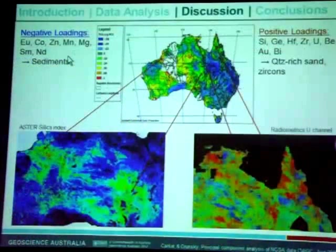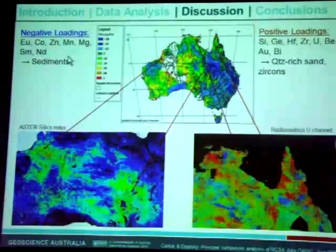For PC2, negative loadings are europium, cobalt, zinc, manganese, magnesium, et cetera, which we interpret to represent sediments and other weathered areas — though it's a somewhat confused loading that needs more work. The positive loadings are represented by silicon and germanium, which behave geochemically quite closely together in this dataset, along with zirconium and elements representing heavy minerals. We think this is a good representation of quartz-rich sand and zircons, again indicating high weathering.